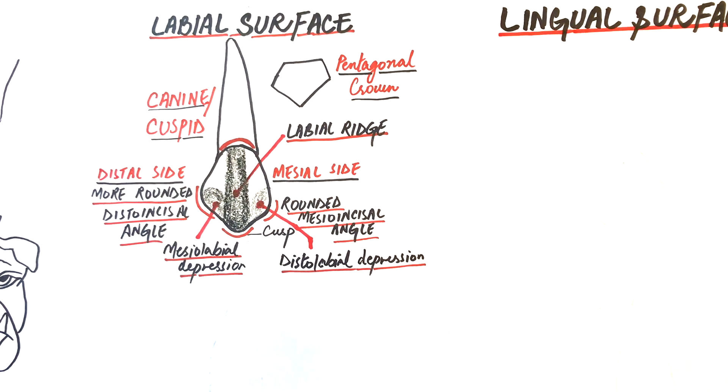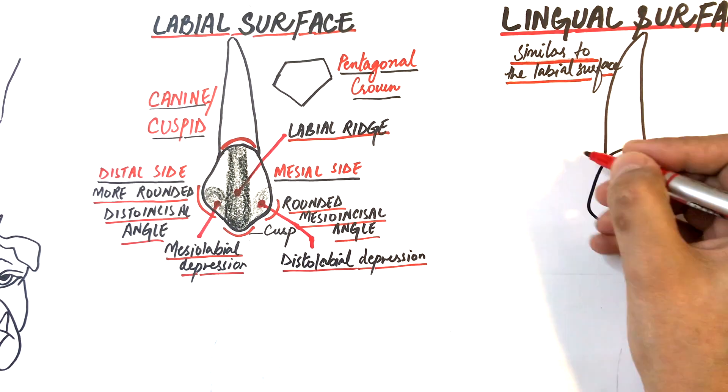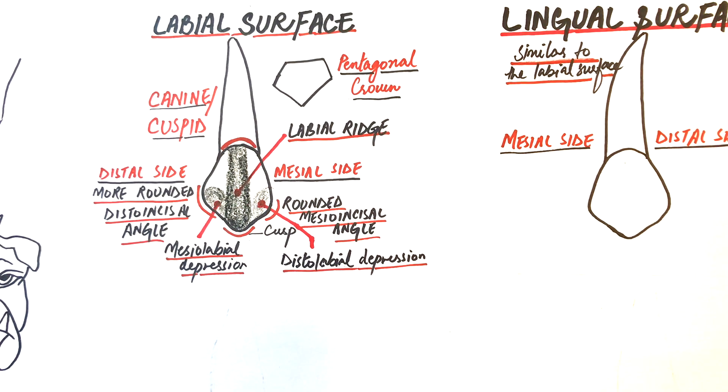From the lingual surface, the mesial, distal, and incisal outlines are similar to that of the labial surface. The cervical line, unlike the labial surface, curves asymmetrically with a slight offset to the distal.